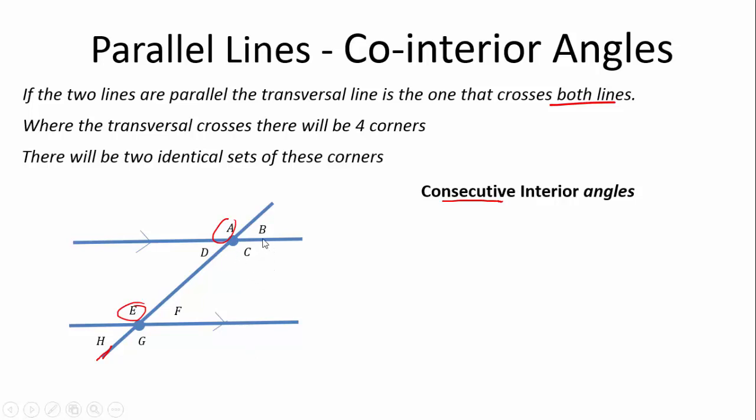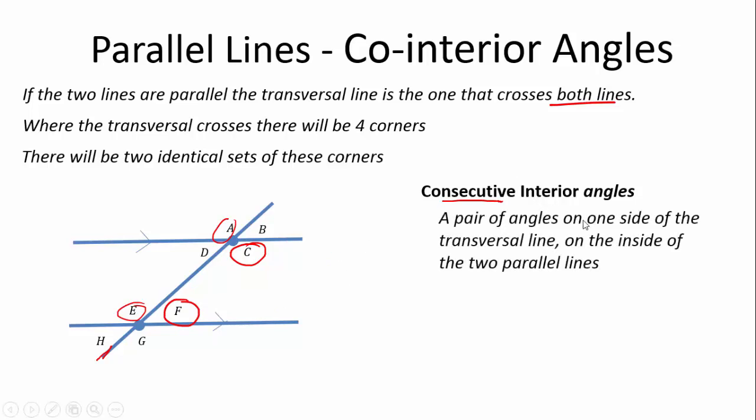Can you understand or guess what might be the co-interior angles here? The consecutive angles. Interior, so they're on the inside, and they're consecutive. So, for example, C and F are co-consecutive interior angles. It is a pair of angles on one side of the transversal line on the inside of the two parallel lines.